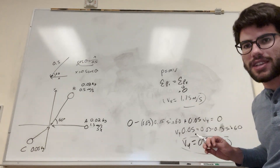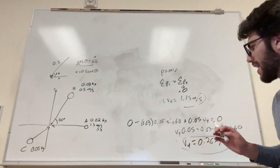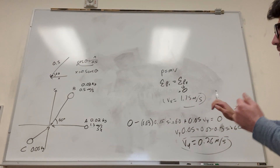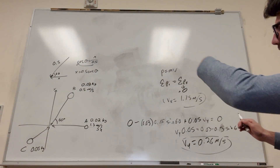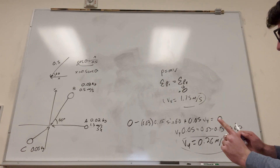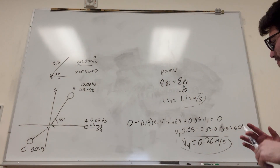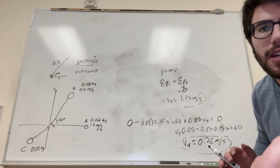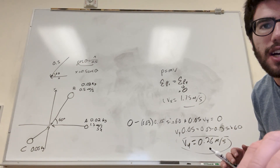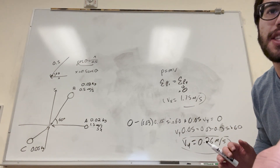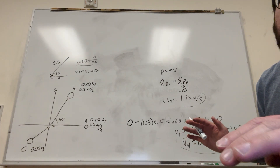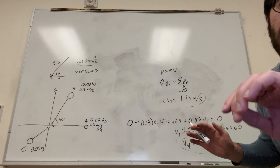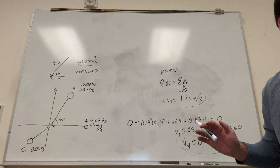So we have our two components of ball c: 1.75 m/s in the x direction and 0.26 m/s in the positive y direction. So the final part: use the velocity we found, and it wants to find the change in kinetic energy in the system. The change in kinetic energy is the kinetic energy at the end minus the kinetic energy at the start.